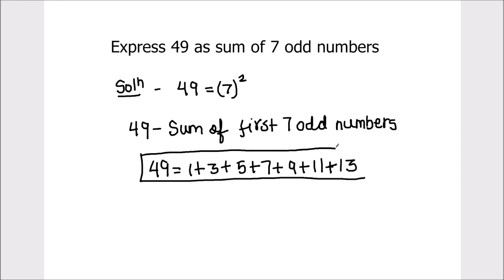So this is how we can express 49 as the sum of 7 odd numbers. I hope this video is helpful to you. If you like the video, please hit the like button and subscribe to my channel for more math videos. Thanks for watching.